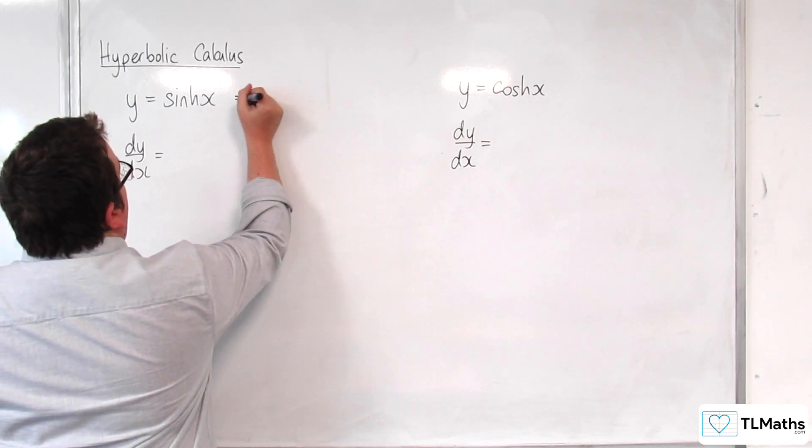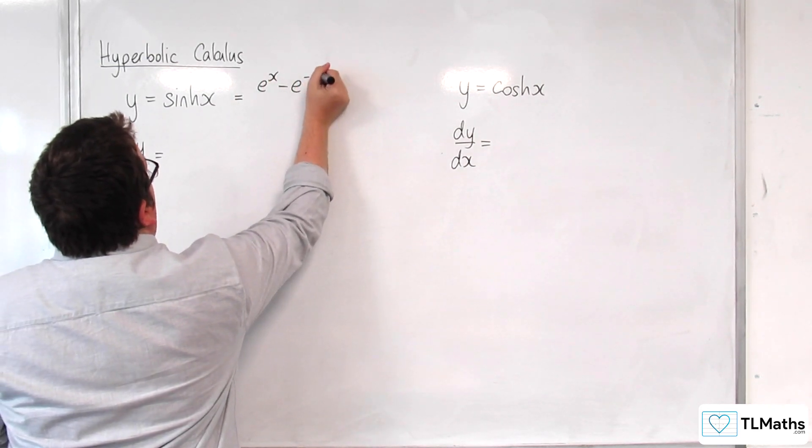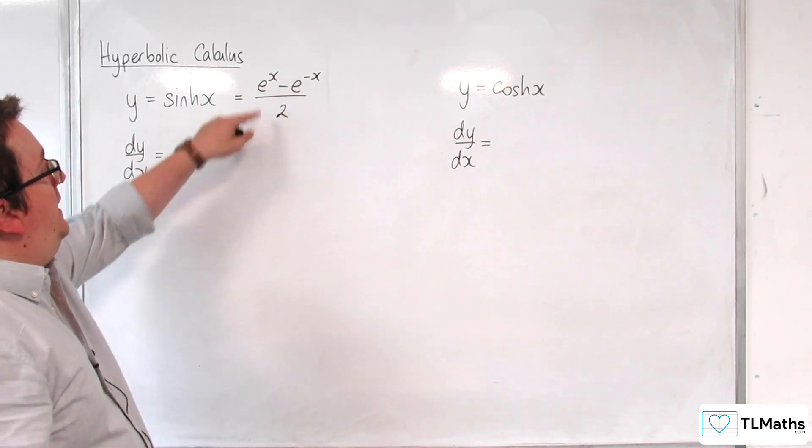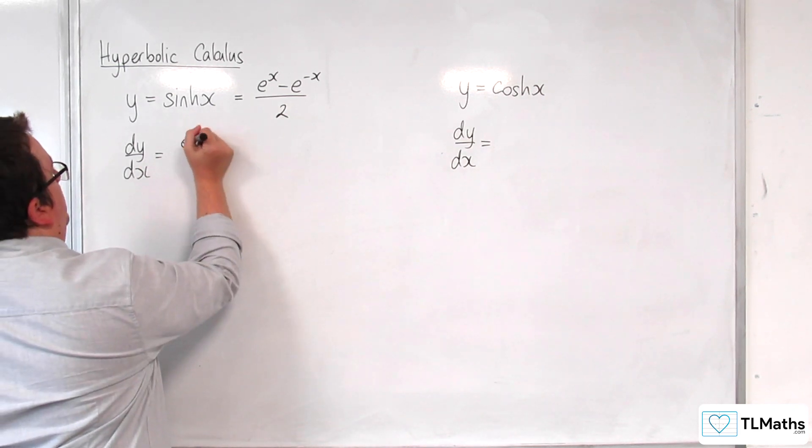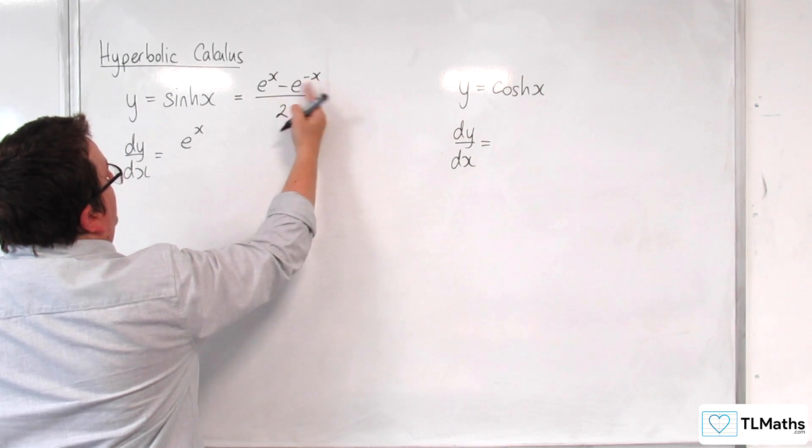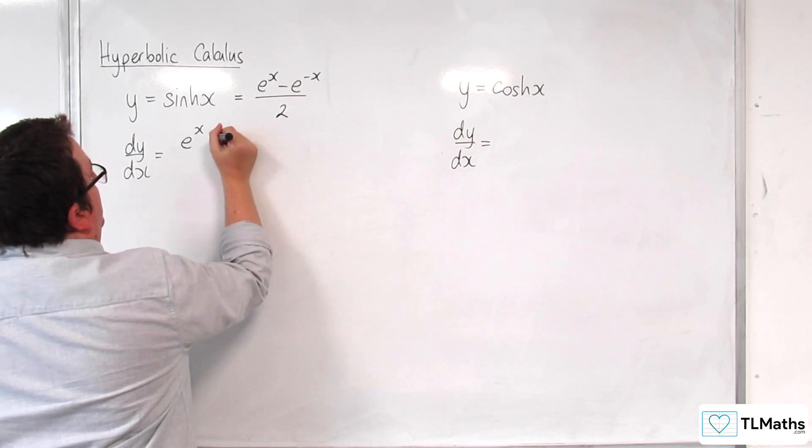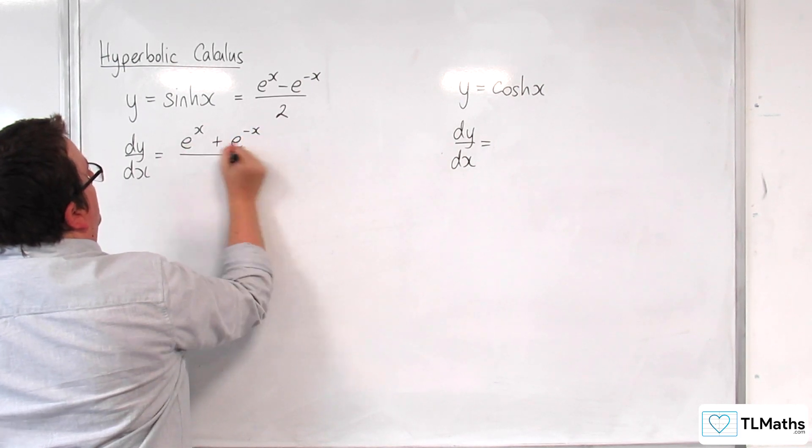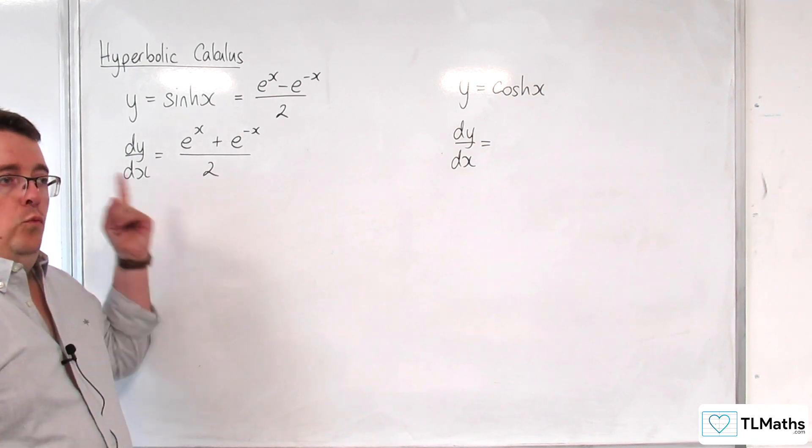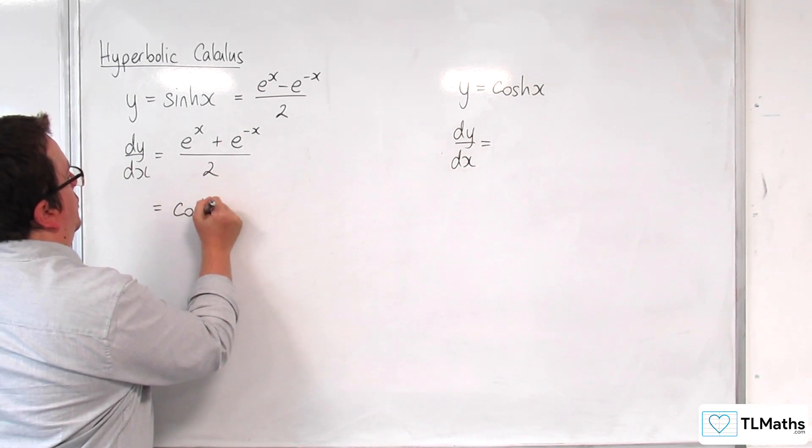So sinh is, if you remember, e^x - e^(-x) over 2. When we differentiate this, e^x differentiates to itself. e^(-x), the minus sign is going to come down to the front using the chain rule and multiply with the minus sign there. So we get +e^(-x), and that's still going to be over 2. So actually, y = sinh x differentiates to cosh x.